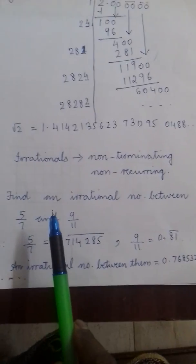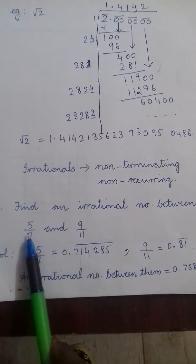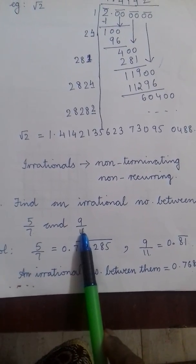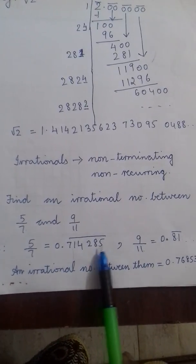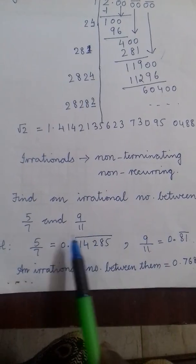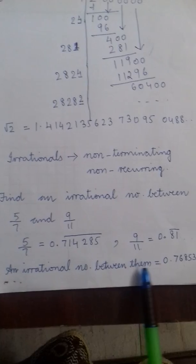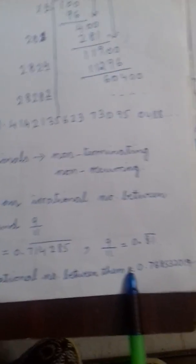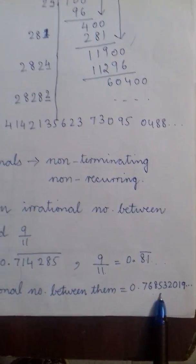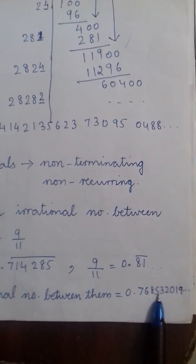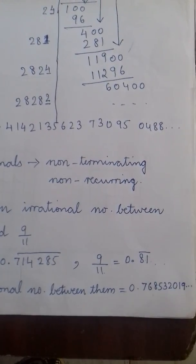Questions based on this part can be of this form. Find an irrational number between two given rational numbers. So 5 by 7, you put it into decimal form. 9 by 11 also put in decimal form. This starts with 7, this starts with 8. So an irrational number between them can be a non-terminating, non-repeating decimal. So you can write it with your own choice of decimals but it should be more than 0.7 and less than 0.8.